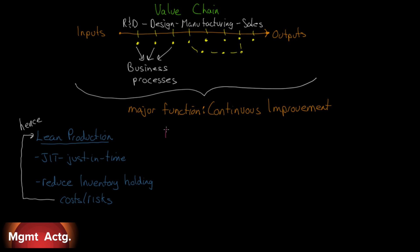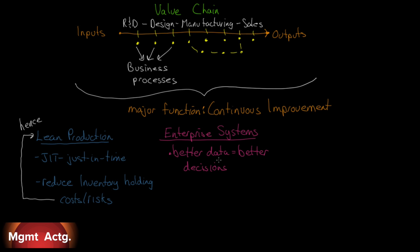Enterprise systems: there was a time when manufacturing would have its own IT system and marketing would have its own IT system, but they wouldn't talk to each other — separate databases that never shared information. An enterprise system works on the premise that if you have better data, you make better decisions. With the advent of relational databases, instead of multiple data banks, you have one relational database where every bit of information is related through key identifiers. Customer information may be in one place but linked to a product — one relational database rather than isolated data banks.